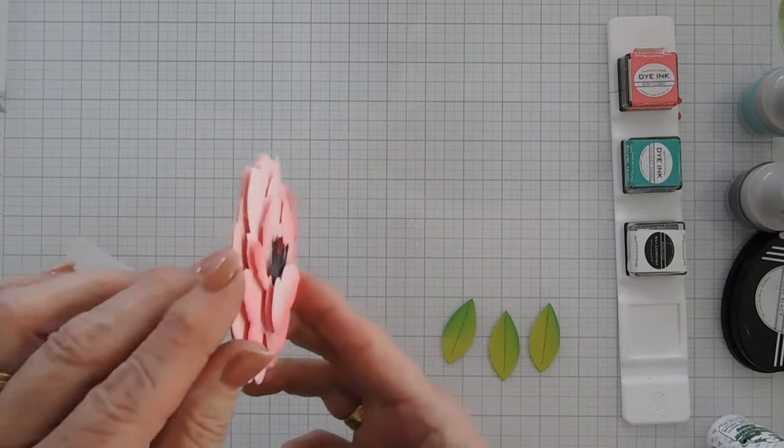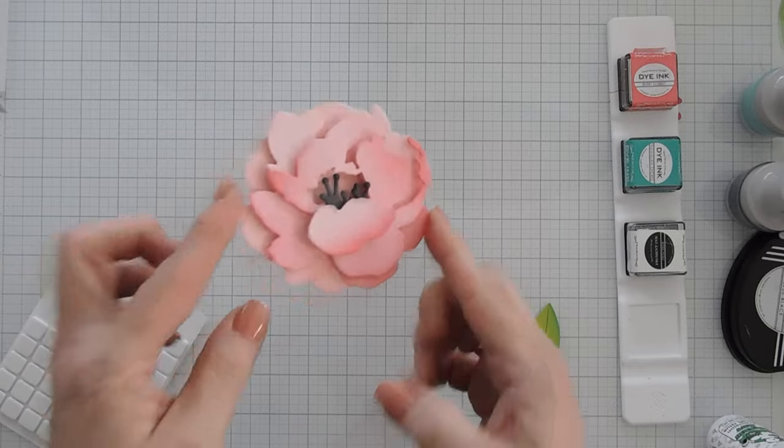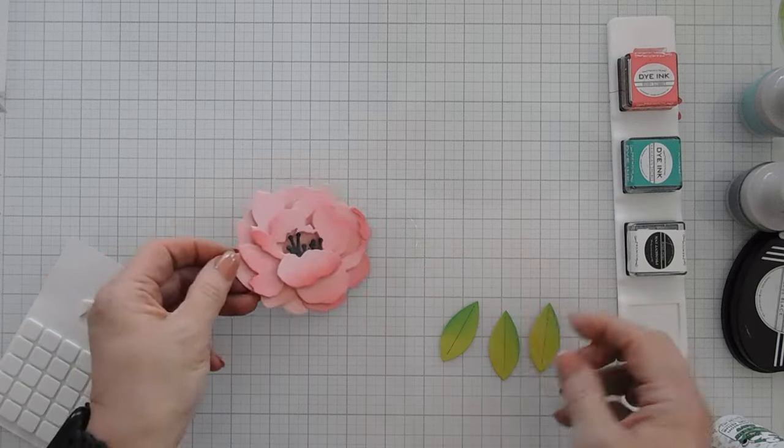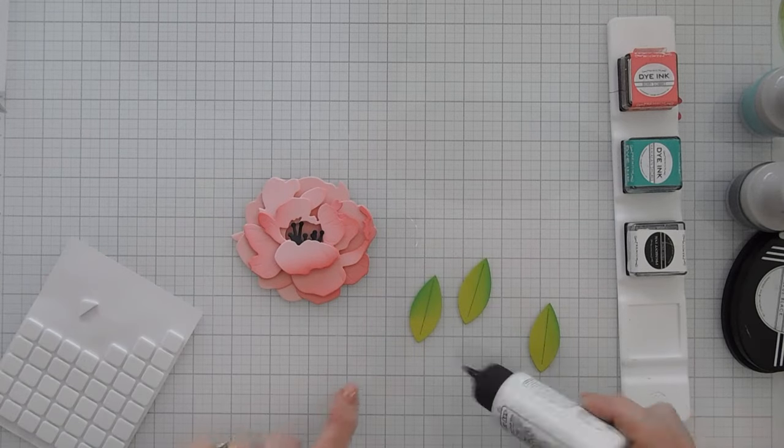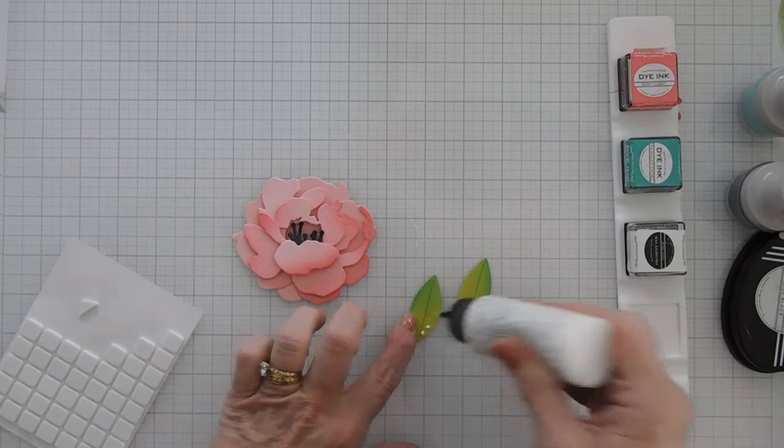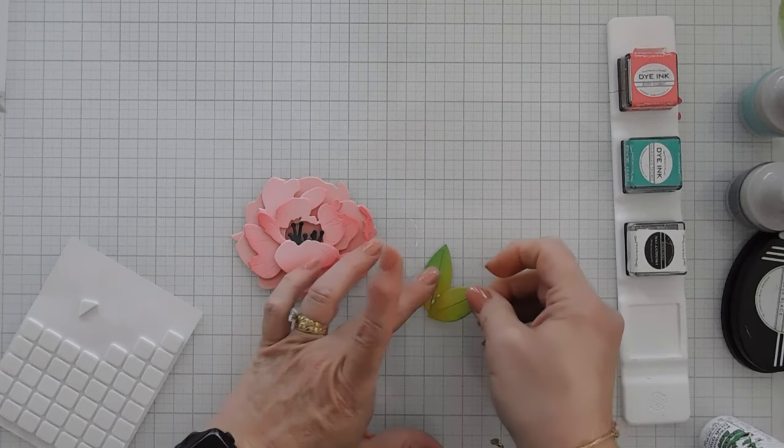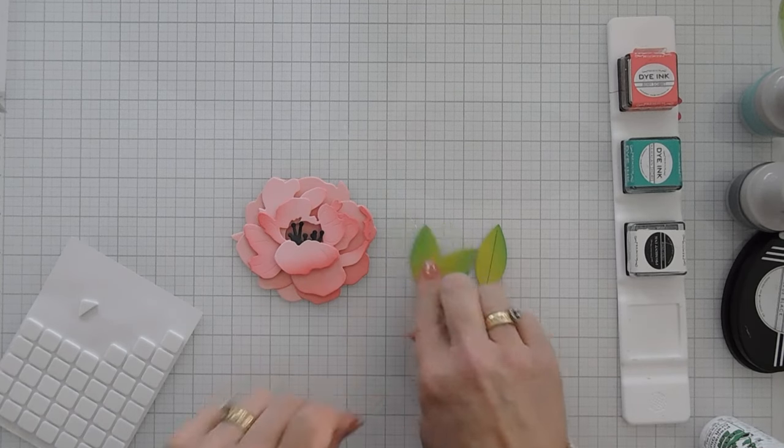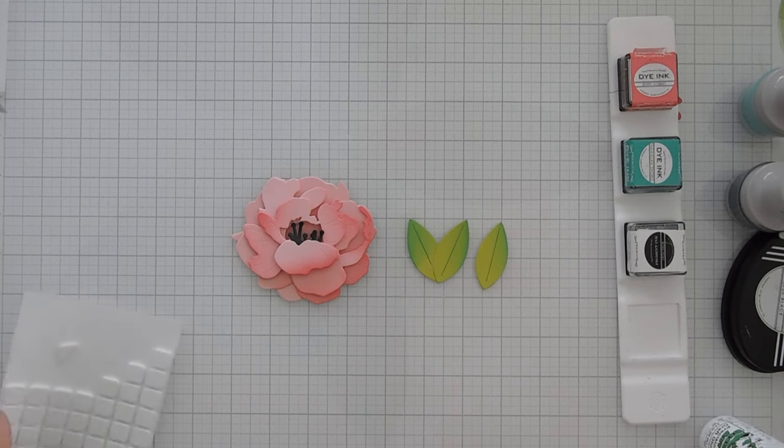There's lots of layers on here. Of course if you don't want all this dimension, you can skip the foam tape. I just think this is such a beautiful floral. Beautiful focal point. I'm going to add glue at the very bottom of my leaves. I know I went two together. I'm not going to add my leaves just yet. We'll add the leaves last.